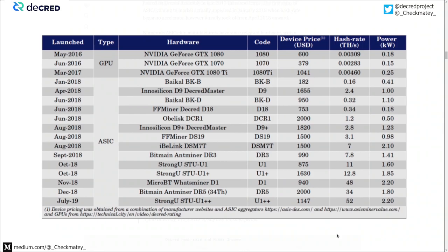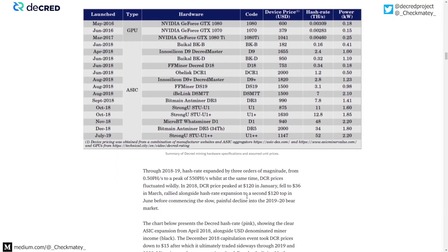A table documents the key devices, ranging from the three main GPUs that were the contemporary top miners at the time, through the full list of ASIC devices that have come out at various points. The first ASIC started to come out in January 2018, with real pickup around April — where we saw hash rate start to really explode. ASICs increase in hash potential over time, from fractions of a tera hash per second in the GPU phase all the way to the modern miners. The D1, DR5, and U1++ are the contemporary miners operating on the network at the time of this study.